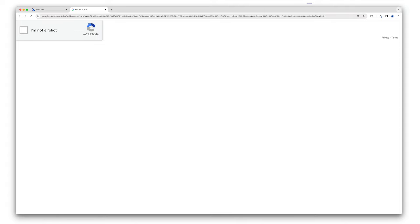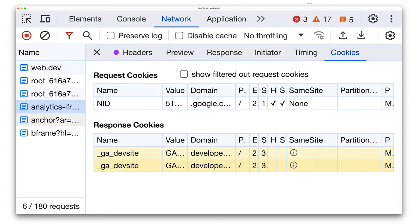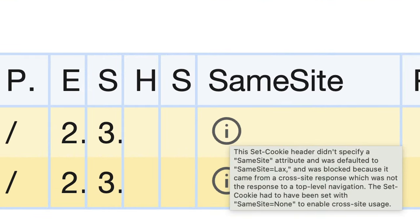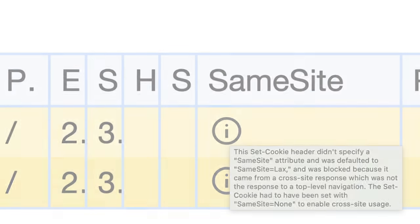In this case, the included file is a reCAPTCHA used by web.dev. In the response cookies same-site column for the analytics iframe, you'll notice an 'I' in a circle. As it says in DevTools, this means that same-site=none wasn't specified for a cross-site cookie, so the same-site value defaulted to lax, and the cookie was blocked.